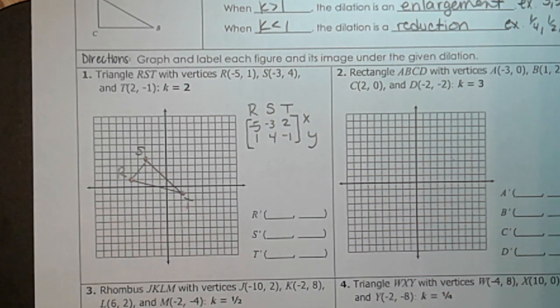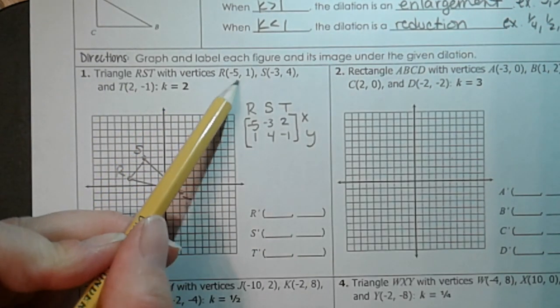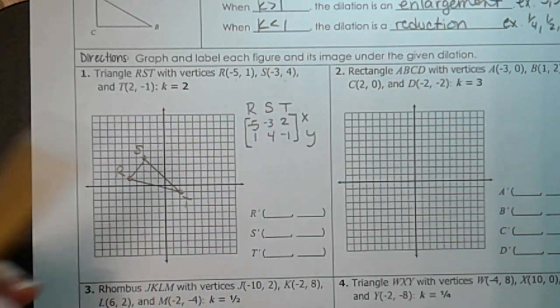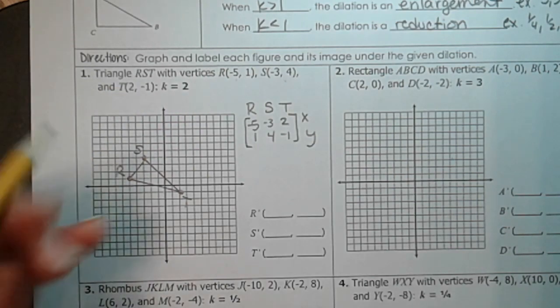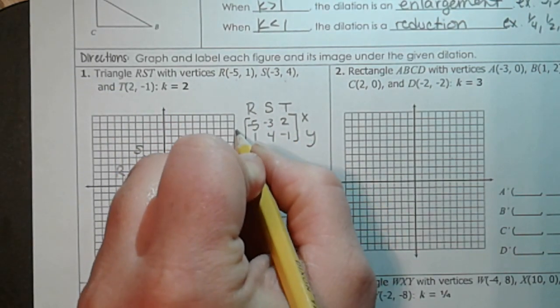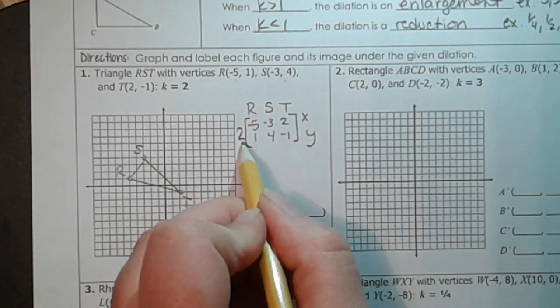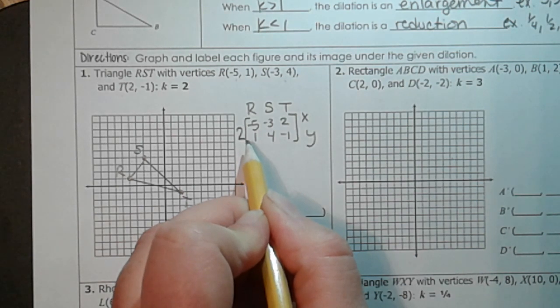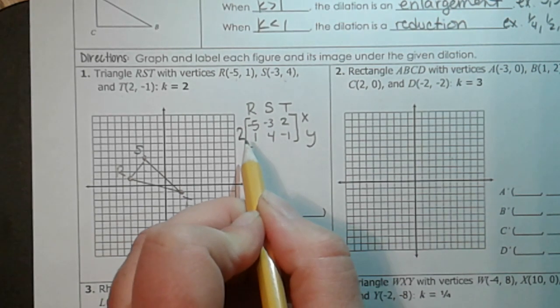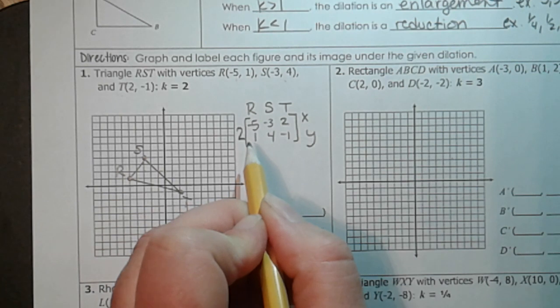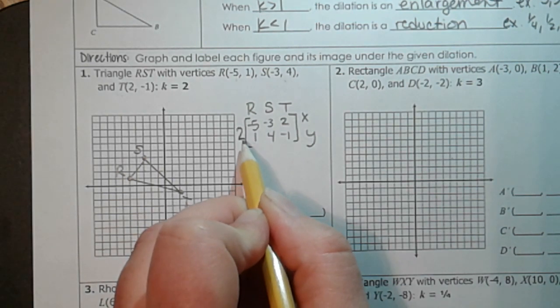So when we're going to do a dilation, it's just as easy as multiplying every single one of these points by the scale factor. Now if we have it written as a matrix, it's even easier because that is just a scalar multiplication problem on the outside of that matrix. When we do a scalar multiplication of a matrix, it's like you distribute in.